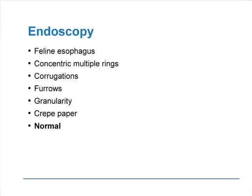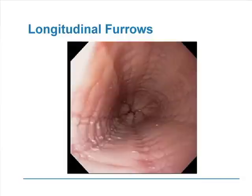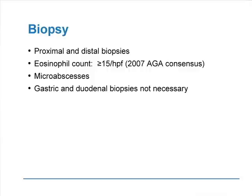On endoscopy, various terms are used to describe findings. 'Feline esophagus' is used because the EOE esophagus is reminiscent of a cat's esophagus. You will notice concentric multiple rings, corrugations, furrows, and granularity. It's sometimes referred to as 'scrap paper' because of the ripples. However, in the early stages of disease, the esophageal mucosa may be entirely normal. So in cases with high index of suspicion, biopsies are a must. Both concentric rings and longitudinal furrows may be present throughout the esophagus.